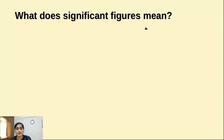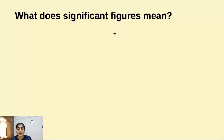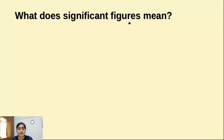What does significant figures mean? Suppose you are having any value, and in that value you have some digits. Which digits are giving you the meaning of how much precise your measurement is? By seeing some digits you can say your measurement is that much precise. Those digits are called significant digits, significant figures, or precision.